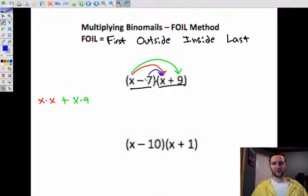Then you got the inside terms. Bring that negative with the 7, so that's really a negative 7 times x, or minus 7x. And then the last two terms is a negative 7 times 9. Okay. Then simplifying that, that gives you x squared plus 9x minus 7x minus 63.